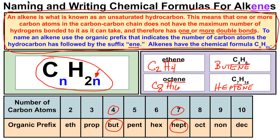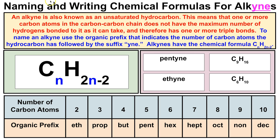Now let's learn how to name and write chemical formulas for alkynes. We've learned about alkanes and alkenes, and an alkyne is also an unsaturated hydrocarbon. One or more of the carbon atoms in the chain does not have the maximum number of hydrogens bonded to it and therefore has one or more triple bonds. So: alkanes have single bonds, alkenes have double bonds, and alkynes have one or more triple bonds. To name an alkyne, use the organic prefixes followed by the suffix '-yne'.